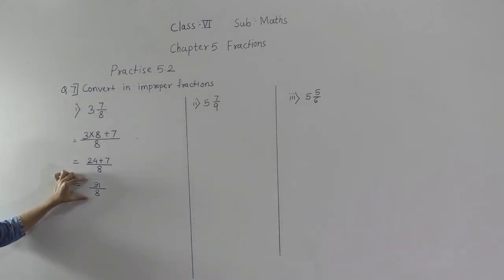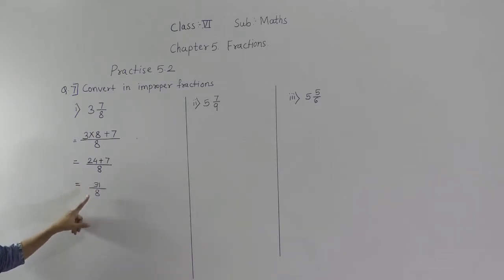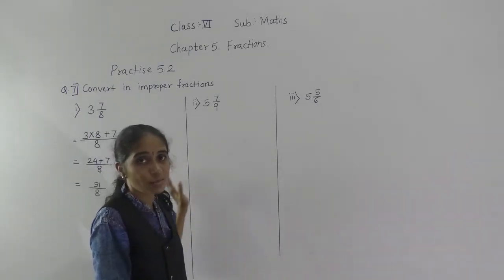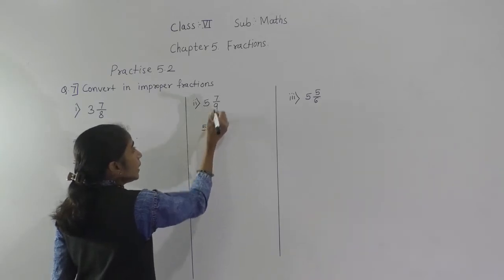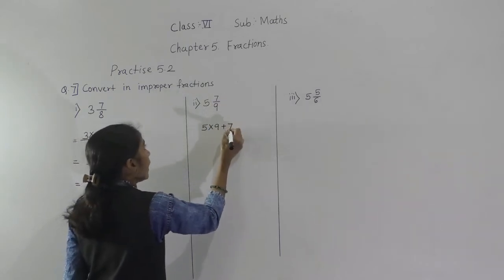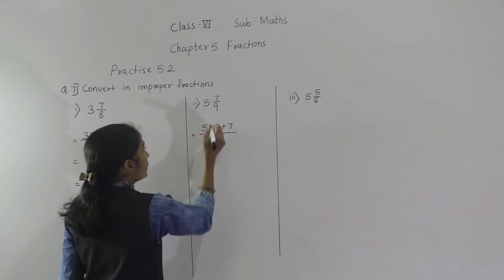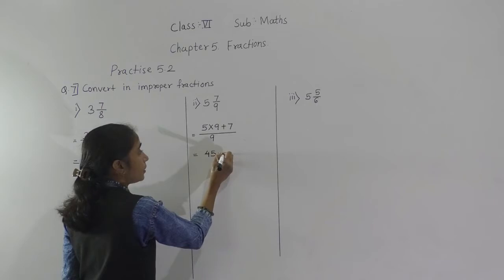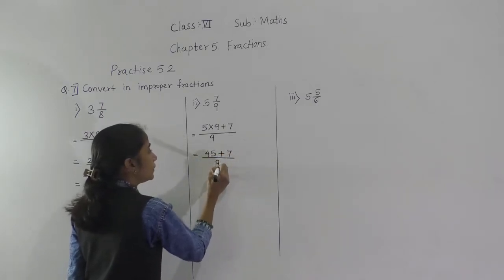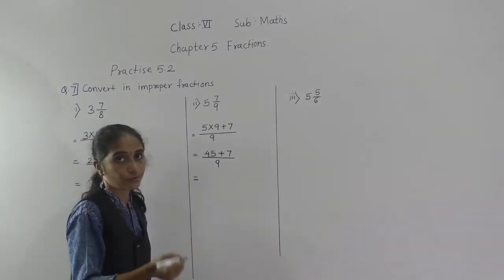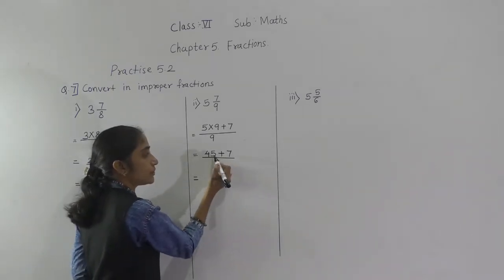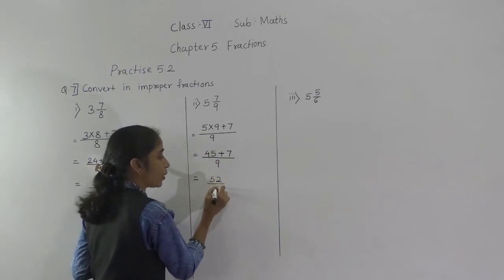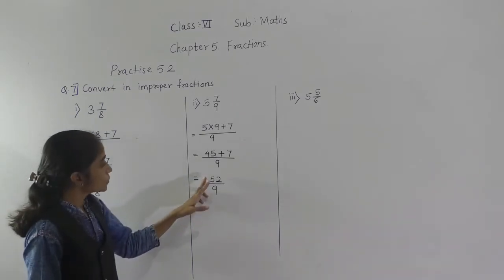So we got 31 upon 8, which is an improper fraction because the numerator is greater than the denominator. So we have converted the mixed fraction into an improper fraction.